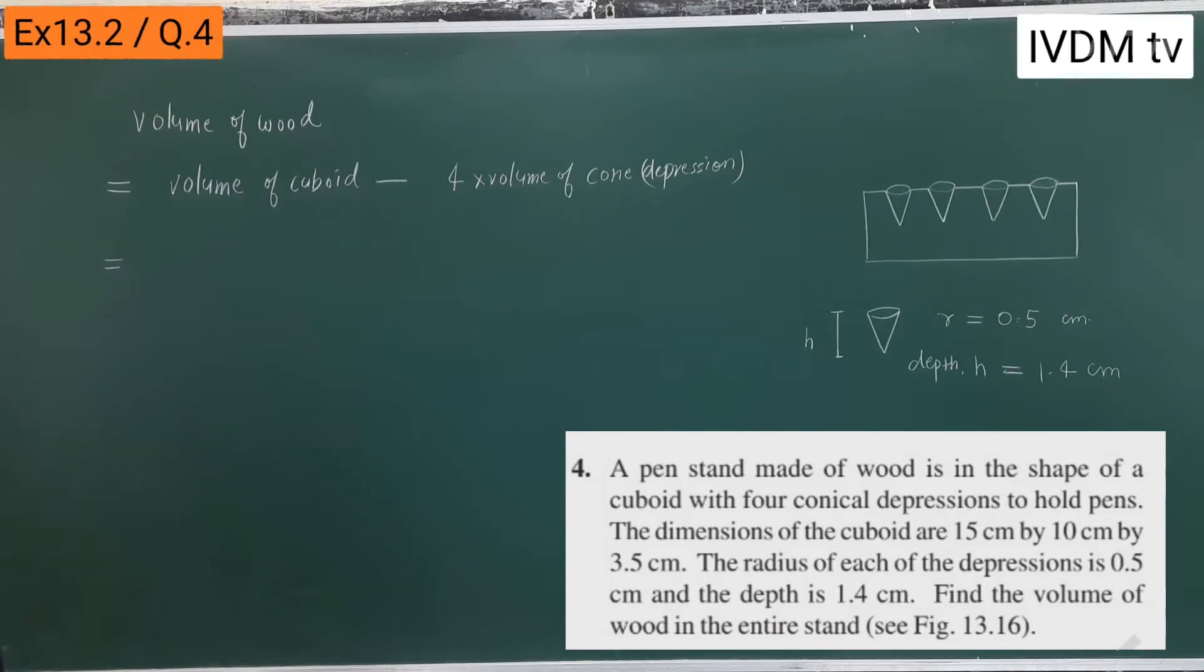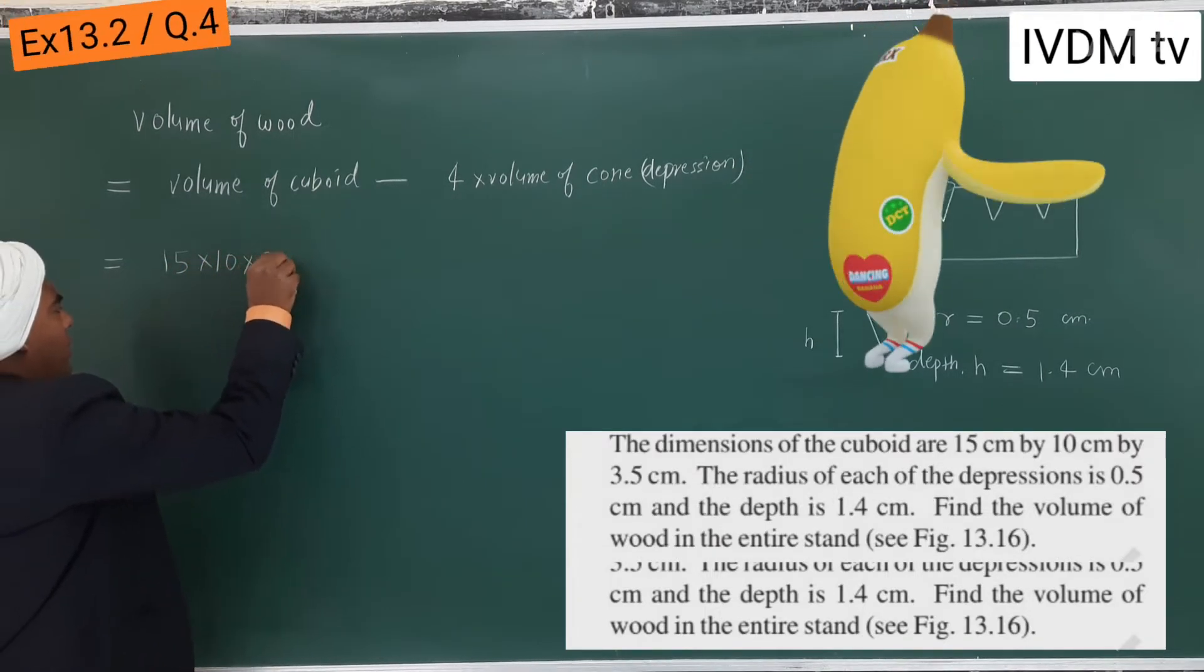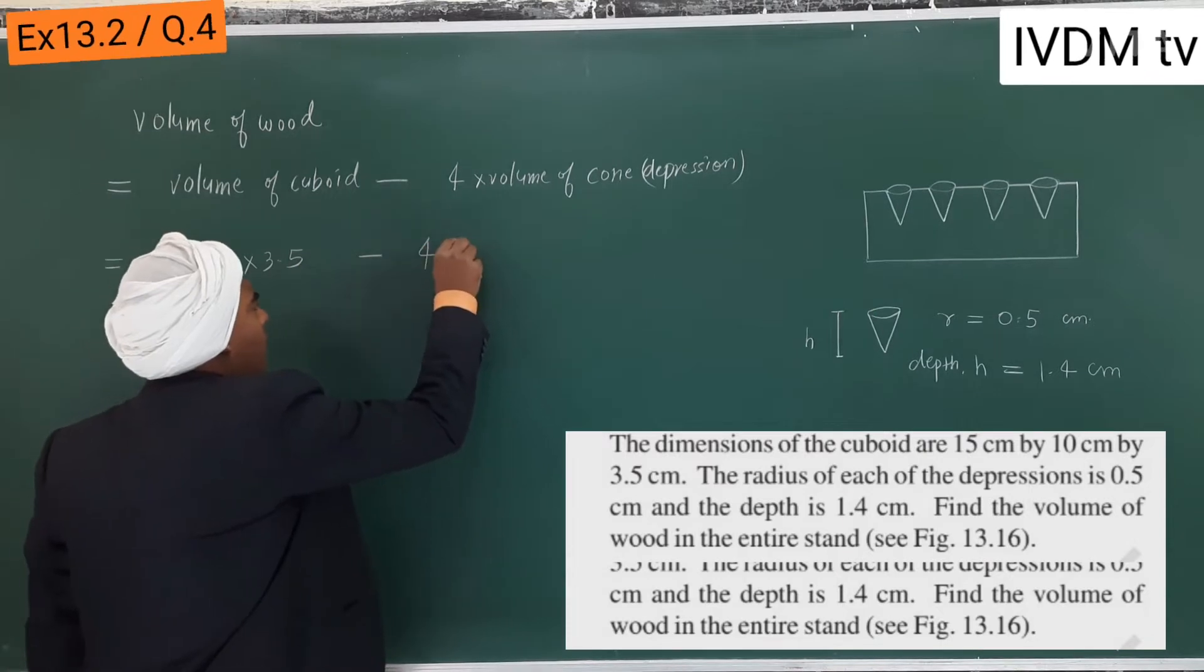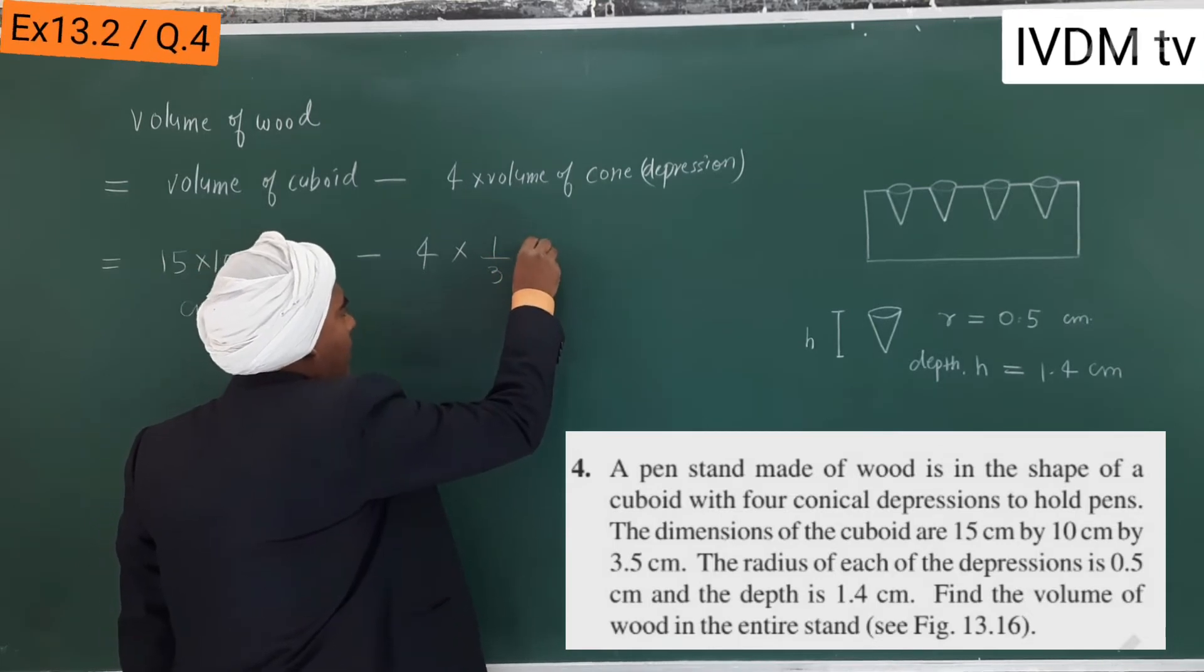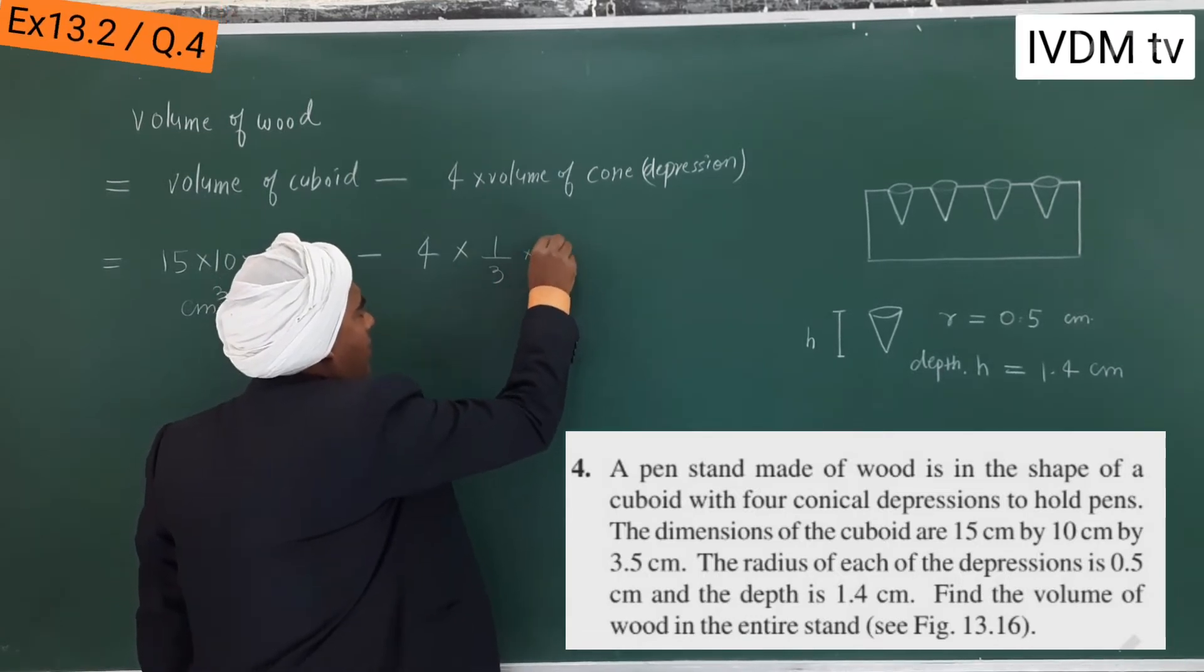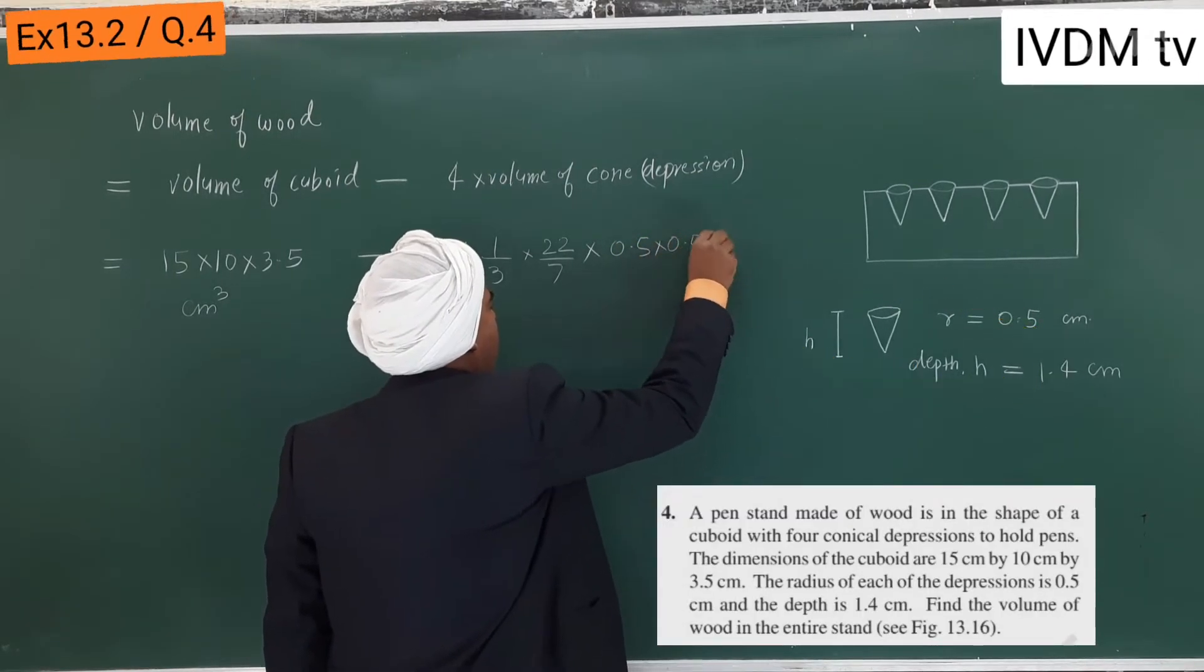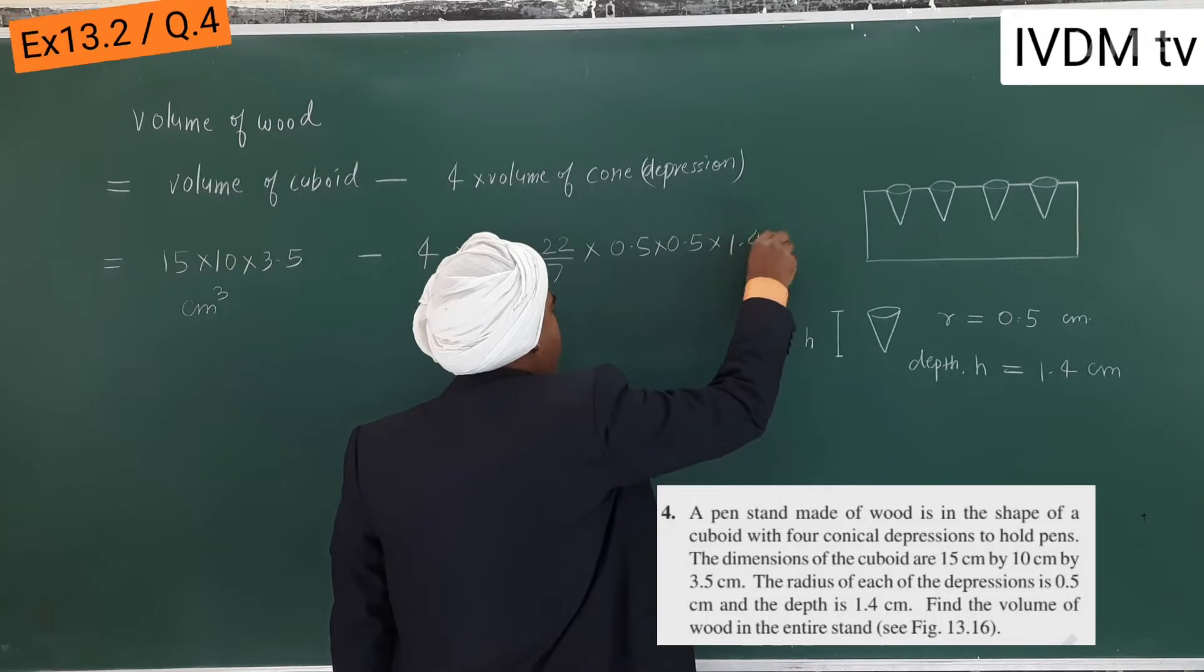15 by 10 by 3.5, this is centimeter cube, minus 4. Volume of cone is 1 upon 3 pi r square h. Pi r square, 0.5 into 0.5, pi 1 upon 3 pi r square h, h is 1.4. This is centimeter cube.